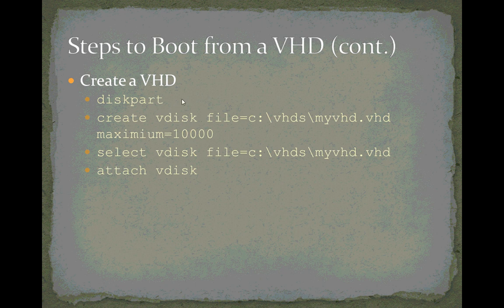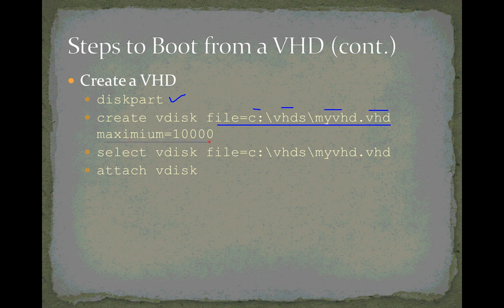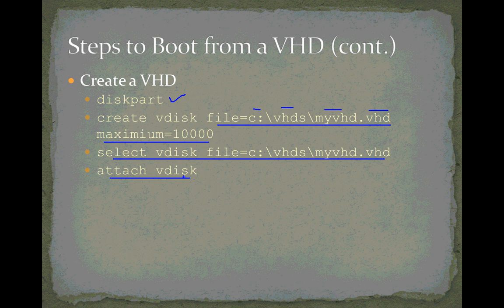Here are the DiskPart steps for creating a virtual hard disk. First, run the 'create vdisk' command, providing the path to the VHD file with a .vhd extension — you choose the filename, directory, and which disk to store it on. We also add the argument 'maximum=10000', meaning 10,000 megabytes — a 10 gigabyte virtual hard disk. Then use 'select vdisk' to make it the active disk, and finally 'attach vdisk' to attach it to your system.